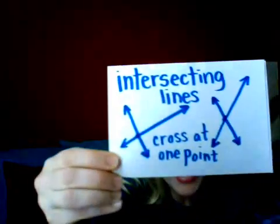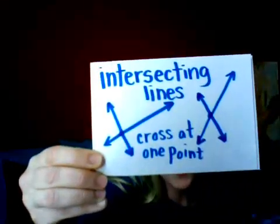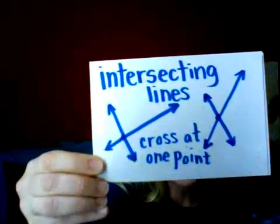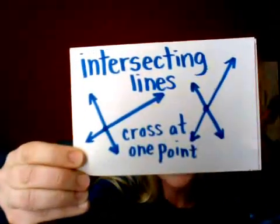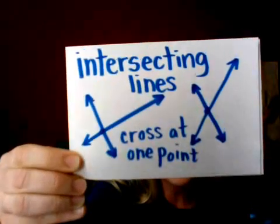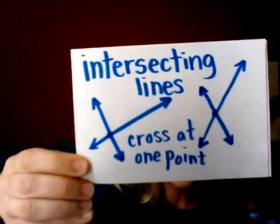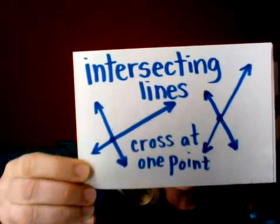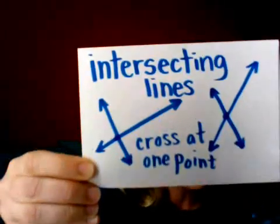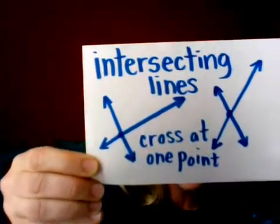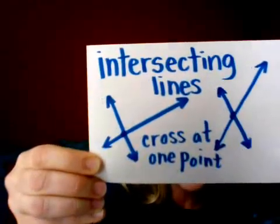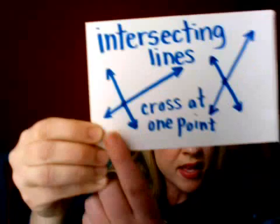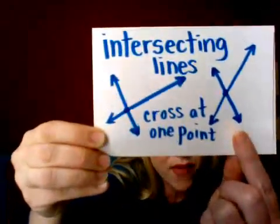Speaking of intersect: intersecting lines cross at one point, like an intersection where your mom would probably stop with her car, your dad would stop his car. Intersecting lines will cross at one point — you put a little dot there showing the point at which they cross. They will form angles. I can see a whole bunch of right angles in one, and some acute and obtuse angles in this one right over here.